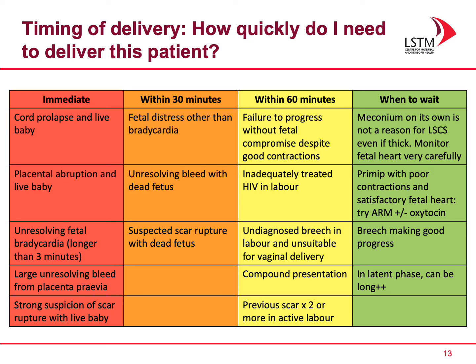An urgent caesarean section should be undertaken within 30 minutes. This is where there is fetal distress other than a prolonged bradycardia, an unresolving bleed with a dead fetus, or a suspected scar rupture with a dead fetus. A non-urgent caesarean section means within 60 minutes. Examples include failure to progress without fetal compromise despite good contractions, a woman in labour with inadequately treated HIV, an undiagnosed breech in labour unsuitable for vaginal delivery, a compound presentation, or two or more previous caesarean section scars.